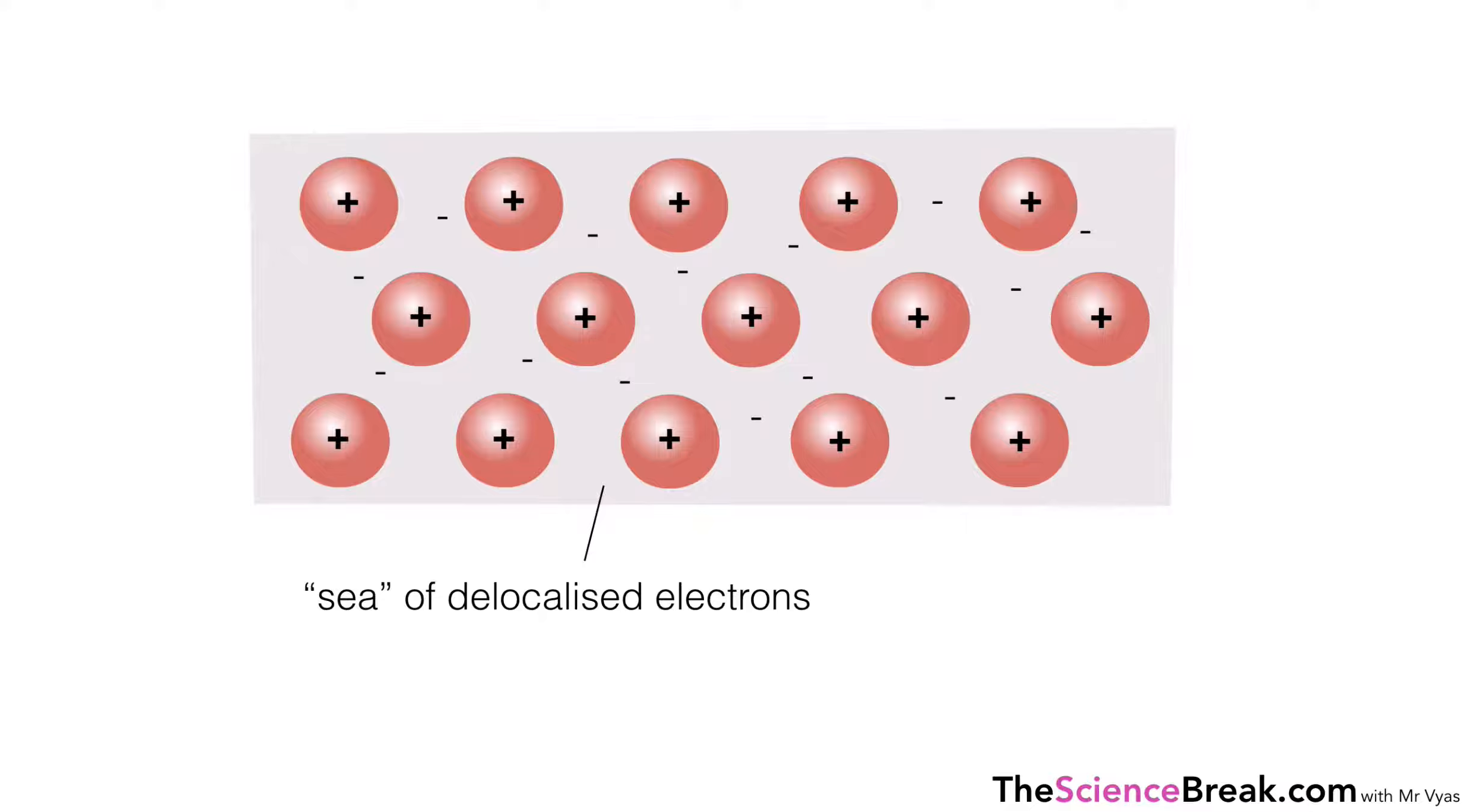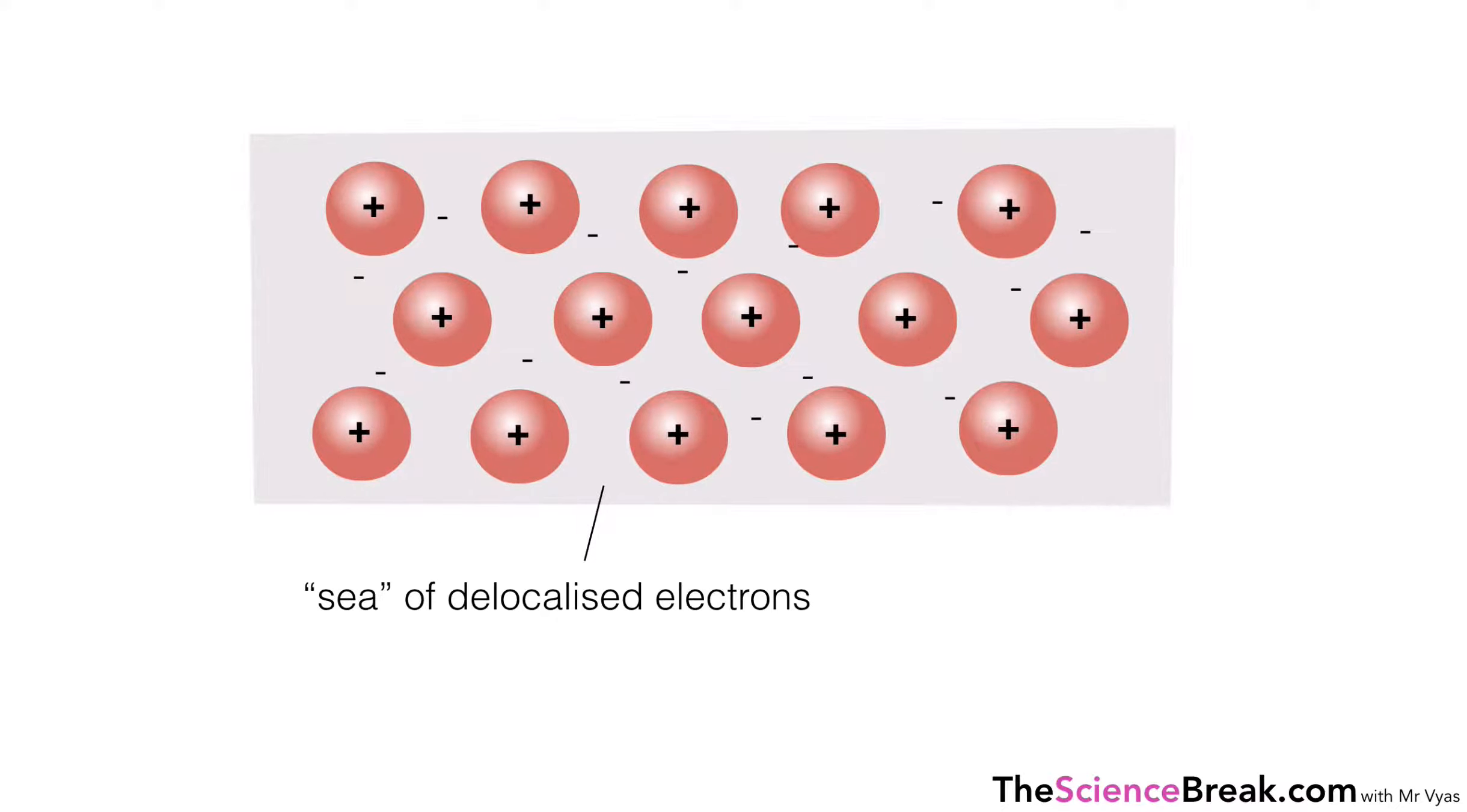It's that negative charge that acts like a glue and holds together those ions. So the positive ions are attracted to the negative electrons in what we call the sea of electrons. This is how the atoms would then be held together, or the ions would be held together in the structure of a metal.